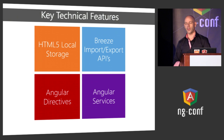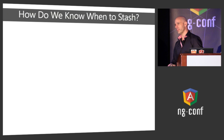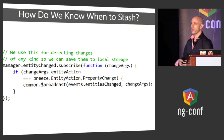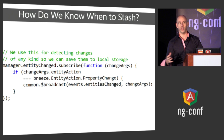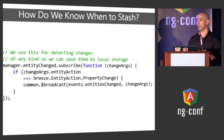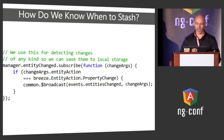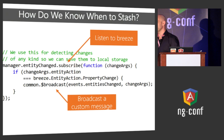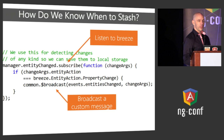There are four main questions to ask when dealing with work in progress. First: how do you know when to stash? Breeze has an entity manager — basically a container around all your plain JSON objects in your Angular app. You listen to the entity changed event. Breeze tells you when an entity has been changed; if it was a property change, you rebroadcast an Angular message saying an entity has changed. That's your trigger to save the data off.